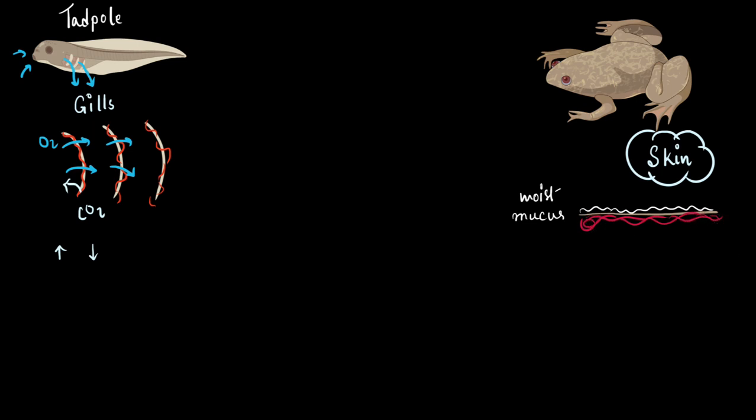So, the oxygen from the air dissolves first into the mucus lining or the wet surface on top of the skin and from there, it gets into the blood. And carbon dioxide from the blood moves out first into this mucus layer, into the wet layer above the surface of the skin and then diffuses out into the environment. That is how frogs can breathe with the help of their skin.